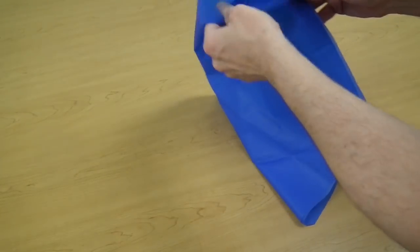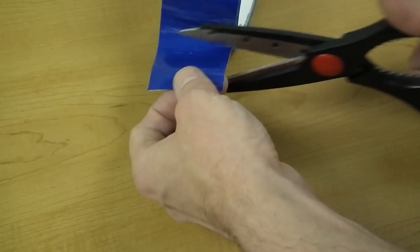Unfold the parachute material and spread it on your table. You will see you now have a perfect octagon.